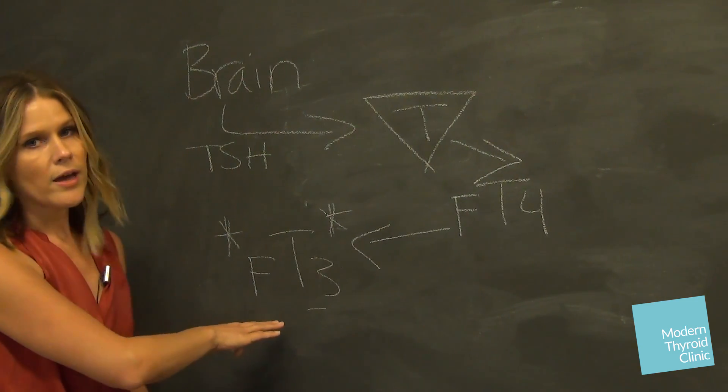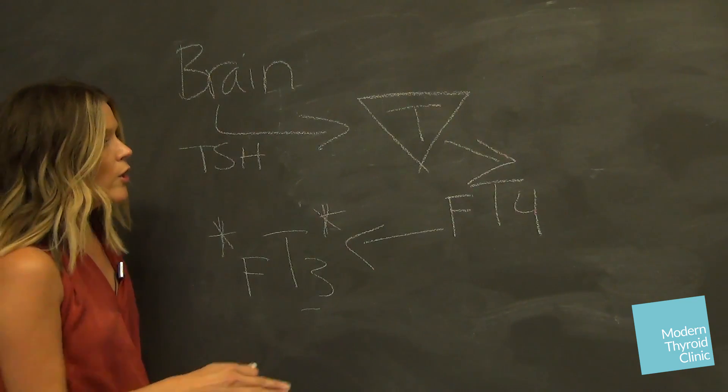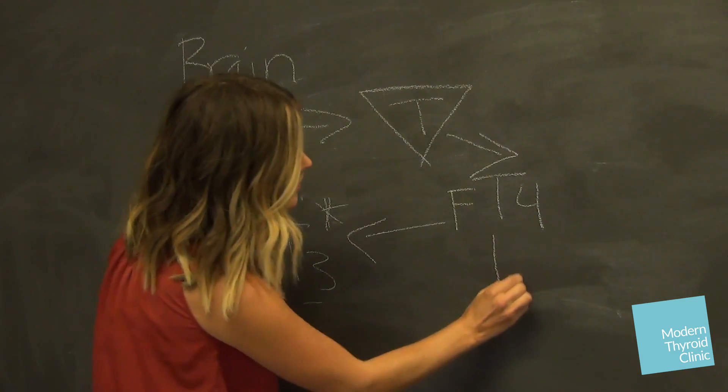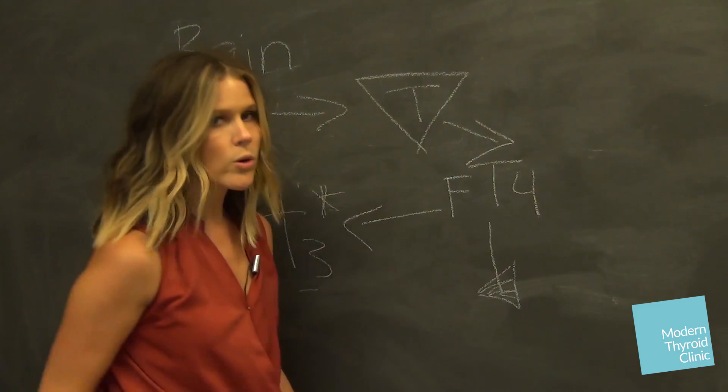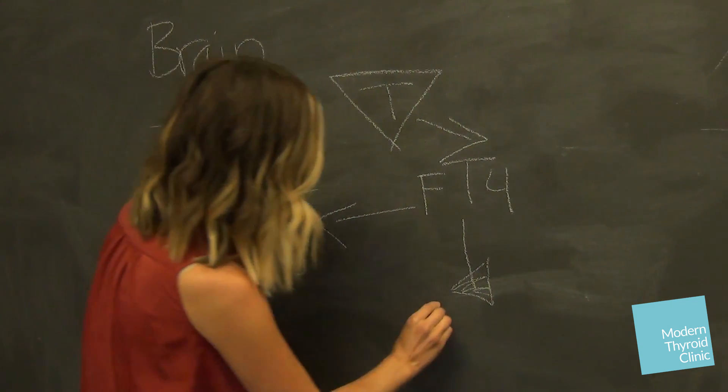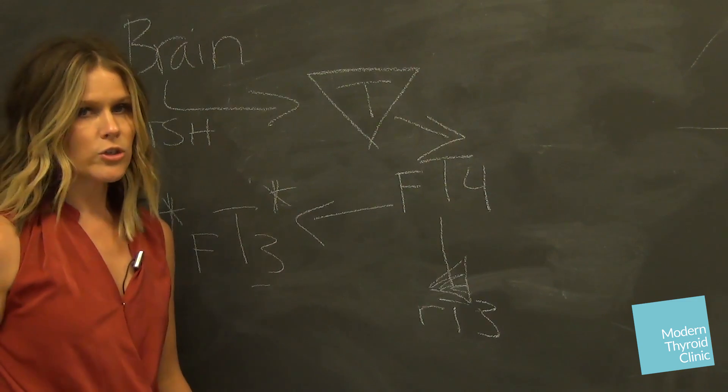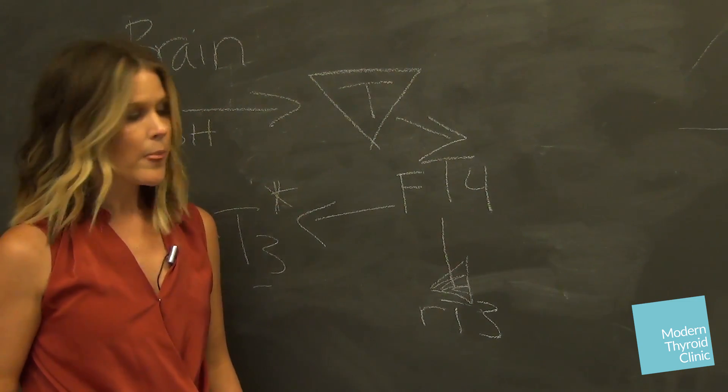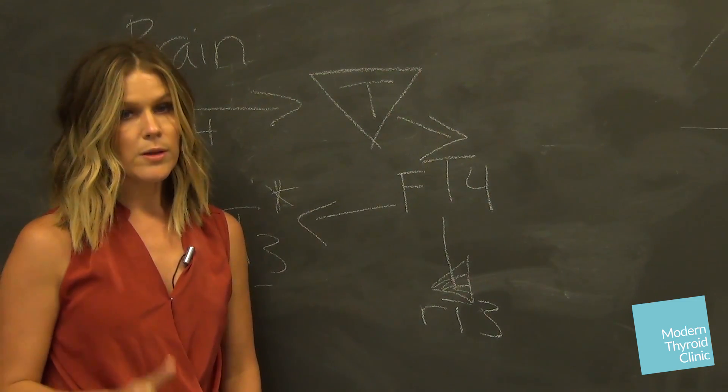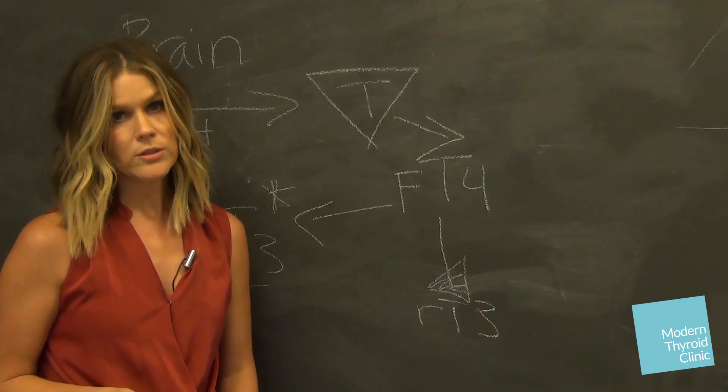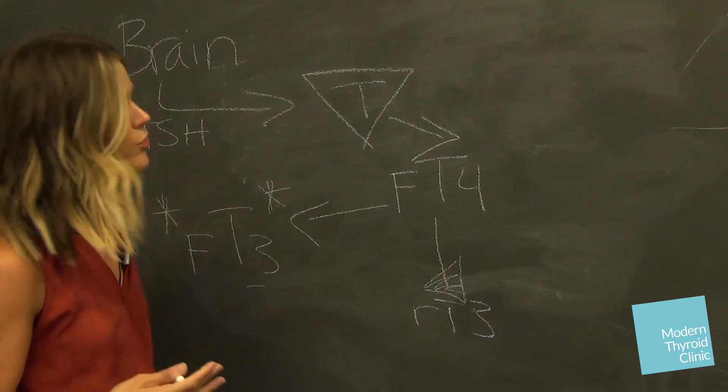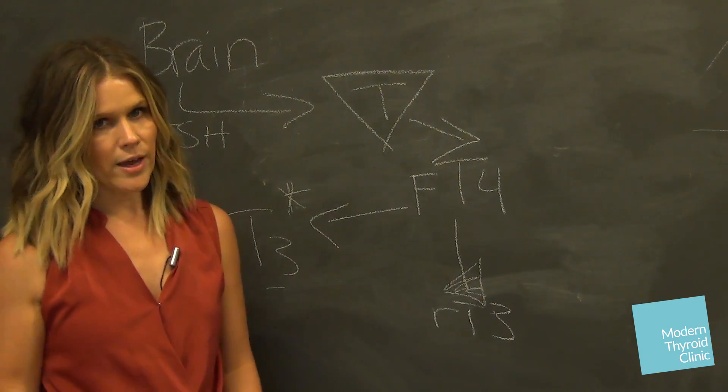So either your T4 becomes T3 or it gets shunted to your body's inhibitory mechanism called reverse T3. Reverse T3 competes for production and absorption of free T3 and it's called reverse T3 because it's actually T3 in reverse. It's a mirror image, like if you hold out your hands.